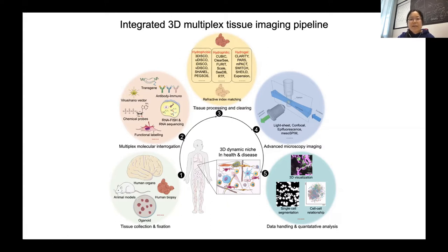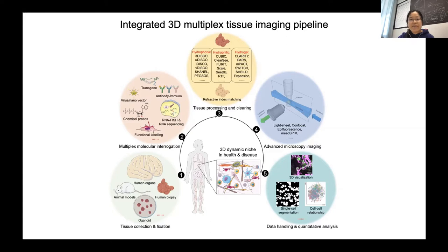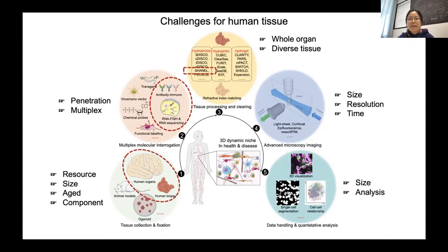The third step is to choose a proper tissue clearing method for your specific tissue. Right now we have summarized three categories of tissue clearing methods: hydrophobic, hydrophilic, and hydrogel-based. Next is how to choose a proper microscope system to acquire 3D data, and the last step is how to handle big data for visualization and quantitative analysis.